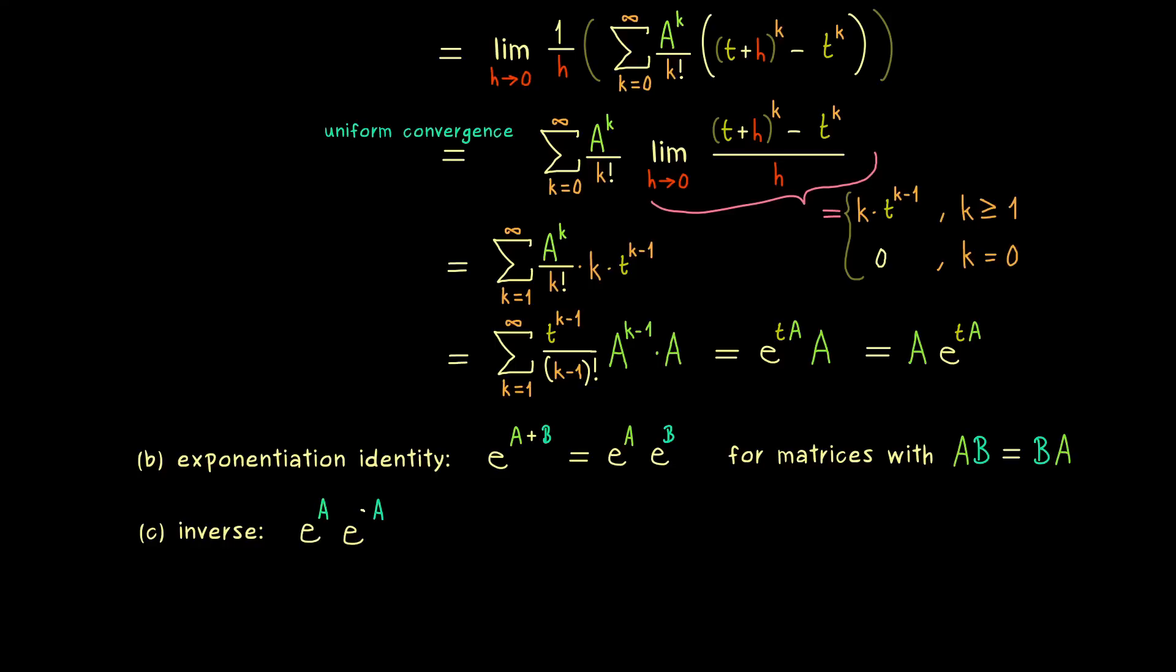However, since we have it for commuting matrices, we can use it to calculate the inverse of e to the power A. Namely, we can just multiply this by e to the power minus A. And since these two matrices are commuting, we can put them as a sum in the exponent, and then it's clear that we just get the zero matrix as a matrix exponential. And now by the power series formula from above, it's clear that this is the identity matrix. And obviously we can also do it the other way around and we get exactly the same calculation. And then you should know from the matrix calculations that these two equations here imply that the one matrix is the inverse of the other. Or in short, e to the power A inverse is equal to e to the power minus A. In other words, pulling in the minus sign also holds for the matrix exponential.